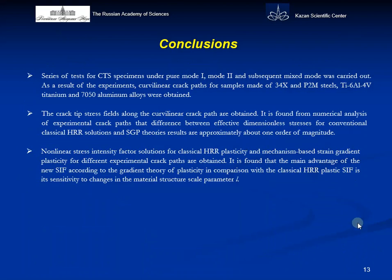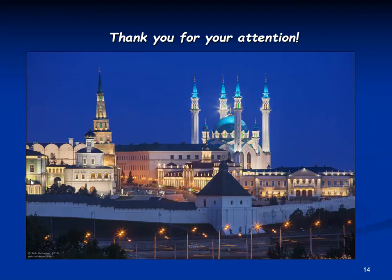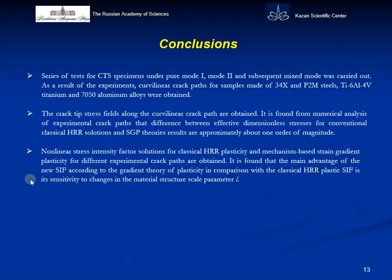Conclusions. Series of tests for CTS specimens under pure mode 1, mode 2, and subsequent mixed mode was carried out. As a result of the experiments, the coplanar crack paths for R2M steel, 3-4-8 steel, titanium, and aluminum alloys were obtained. The crack-tip stress fields along the coplanar crack paths are obtained. It is found from numerical analysis of experimental crack paths that differences between effective normalized stresses for the conventional classical HRR solution and CMSDP results are approximately one order of magnitude. Non-linear stress intensity factor solutions for classical HRR plasticity and mechanism-based strain gradient plasticity for different experimental crack paths are obtained. It is found that the main advantage of the new strain intensity factor according to the gradient theory of plasticity, in comparison with the classical HRR plastic strain intensity factor, is its insensitivity to the material structure scale parameter. Thank you for your attention.